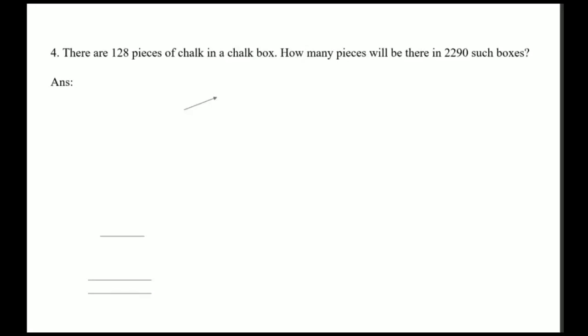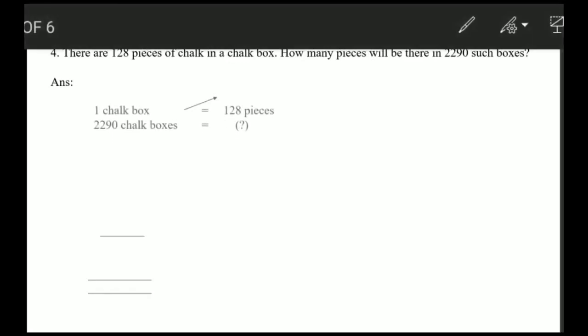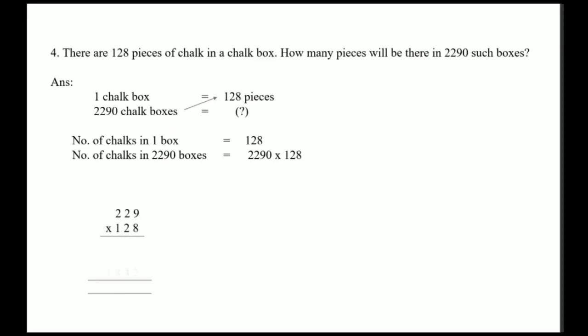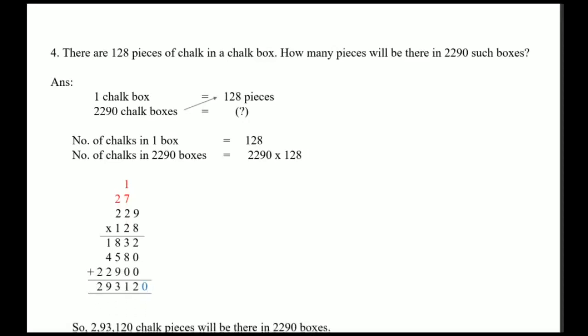The number of pieces in one box is given and you have to find the number in 2290 chalk boxes, so you will do multiplication. Here also, a zero is there in 2290 which you will ignore and add at the end. So you will multiply 229 by 128 and add a zero at the end. The final answer is 2 lakh 93,120 chalk pieces in 2290 boxes.